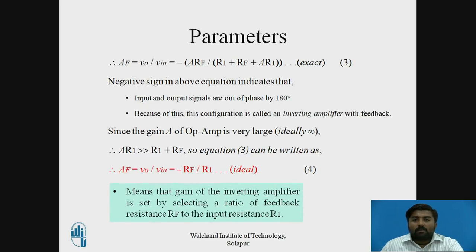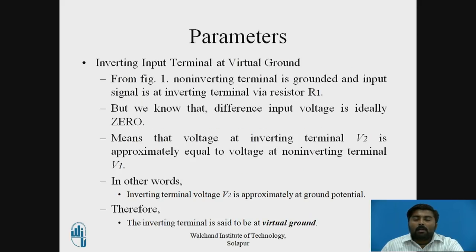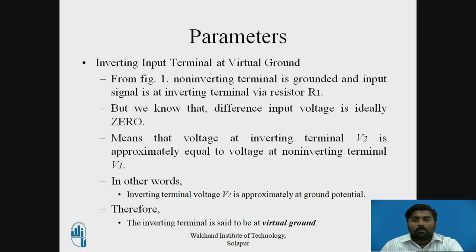This means the gain of the inverting amplifier is set by selecting the ratio of feedback resistance to input resistance. The next parameter is the inverting input terminal at virtual ground. From the figure, the non-inverting terminal is grounded and the input signal reaches the inverting terminal via R1. Since the differential input voltage is ideally zero for an op-amp, the voltage at inverting terminal V2 is approximately equal to V1, which is at ground potential. Therefore, the inverting terminal is said to be at virtual ground.